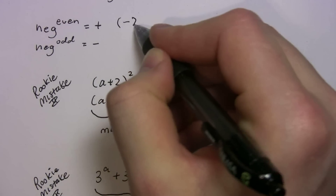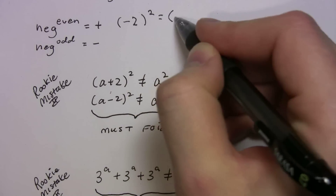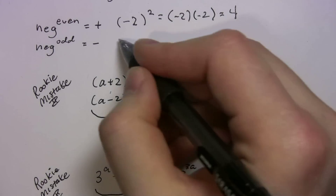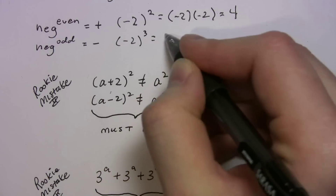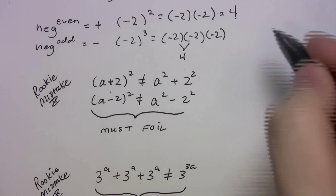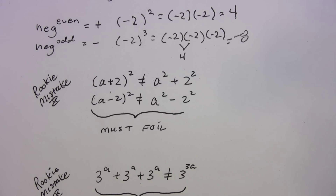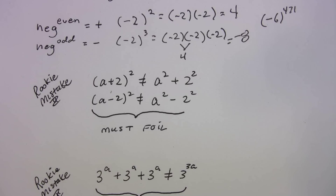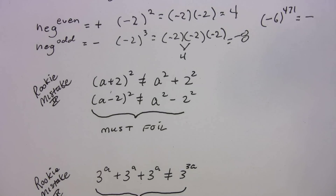Let's do an example. Negative two squared is negative two times negative two, which gives you four — a positive number. What about negative two cubed? That's negative two times negative two times negative two, which is four times negative two, giving negative eight. On the SAT, if you see negative six to the 471st power, you should know that's a negative number raised to an odd power, so it gives you some negative number.